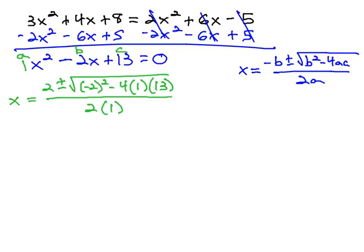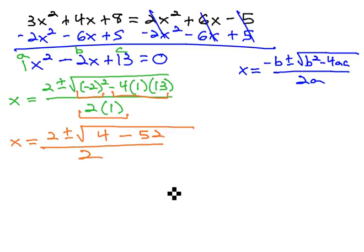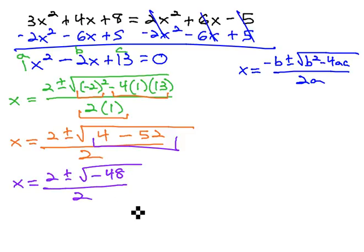Now, we just have to simplify this expression to find our two solutions for x. I usually simplify the exponents and the multiplication in one step, because we won't violate any order of operations. This gives us 2 plus or minus the square root of negative 2 squared, which is 4, minus 4 times 13, which is 52, all over 2 times 1, or 2. Finishing the subtraction inside the radical gives us 2 plus or minus the square root of negative 48, all over 2.